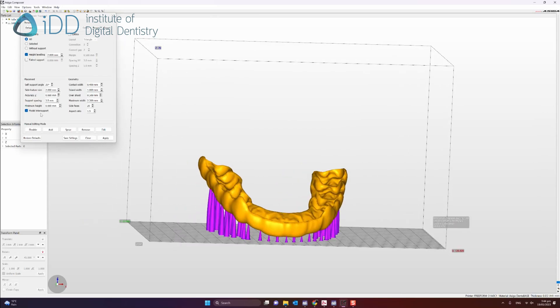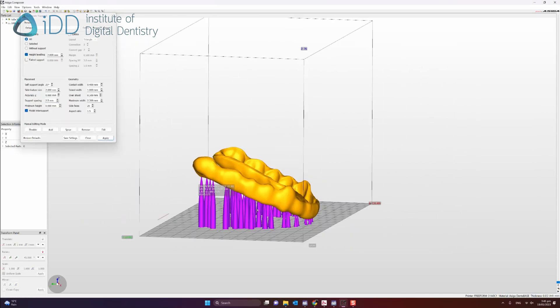Move the design around and make sure the intaglio surface of the splint is not facing the build platform. It is generally recommended to print the splint at a 45 degree angle.